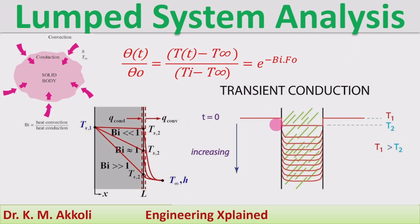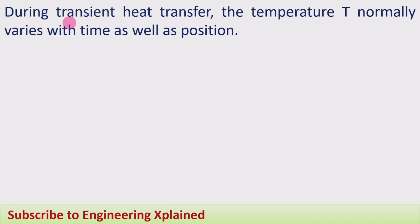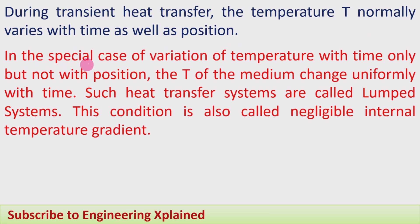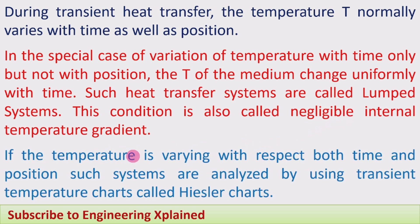We are going to consider some expressions and derive the temperature distribution. During transient heat transfer, temperature T normally varies with both time and position. In the special case where temperature varies with time only and not with position, the temperature of the medium changes uniformly with time. Such systems are called lumped systems, and this condition is also called negligible internal temperature gradient. If temperature varies with both time and position, such systems are analyzed using transient temperature charts called Heisler charts, which I will discuss in the next session.